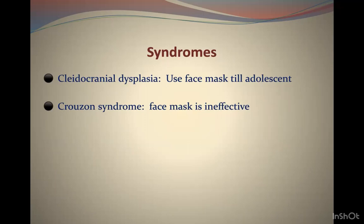In cleidocranial dysplasia, the sutures are normal and open, so the face mask produces visible benefit. In Crouzon syndrome, because the sutures are completely synostosed, face mask treatment is ineffective — both syndromes present as Class 3 but require different approaches based on the underlying structural issue.